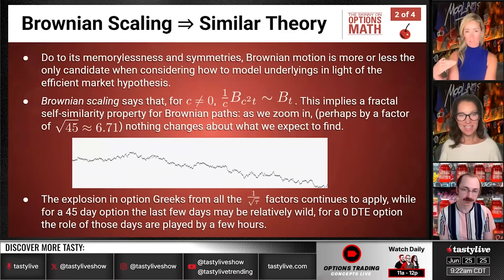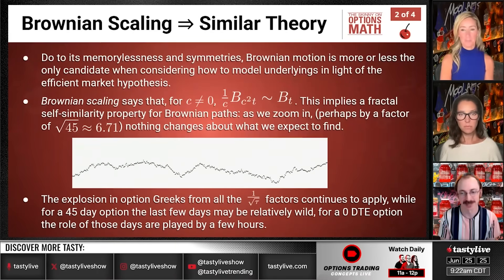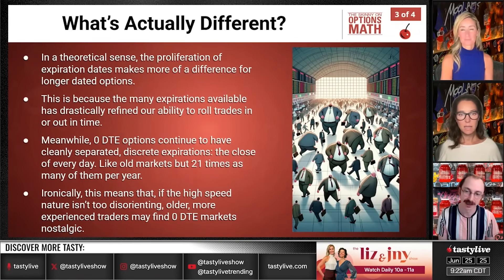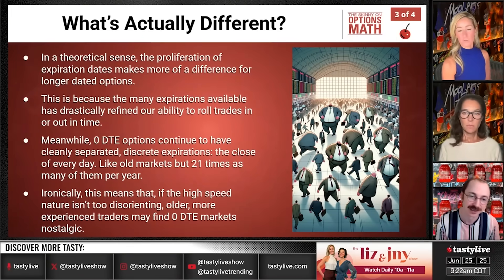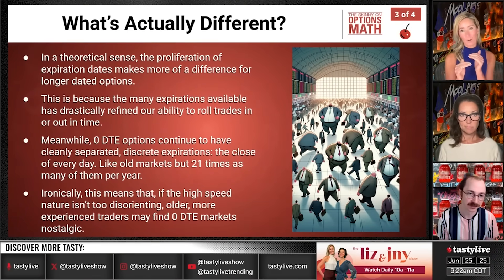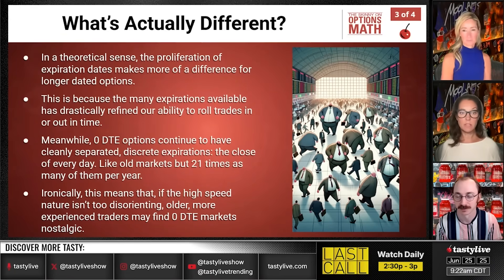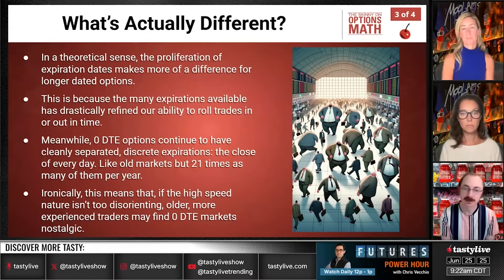Just to clarify for the chat: when I say 1:30, I'm assuming our time zone. To me, 1:30 is too late to leave these on — it's certainly somewhere between noon and 1:30, and 1:30 might be pushing it. When I do iron flies on the zero DTEs, I'm usually out between 12:30 and 1:00 — that's usually when my GTC hits. If you're doing the 20-delta, 20-dollar-wide spreads, you can be out much quicker, maybe in an hour or two. The wider you're willing to be, the faster it'll come in since you're giving up less on your wings.